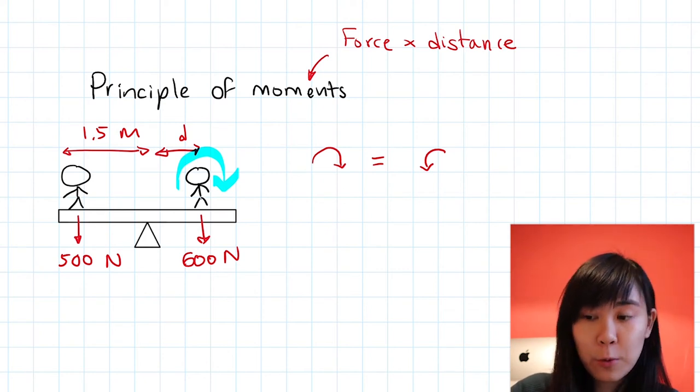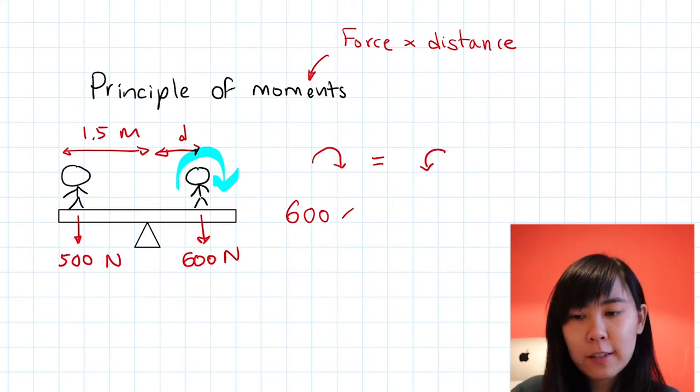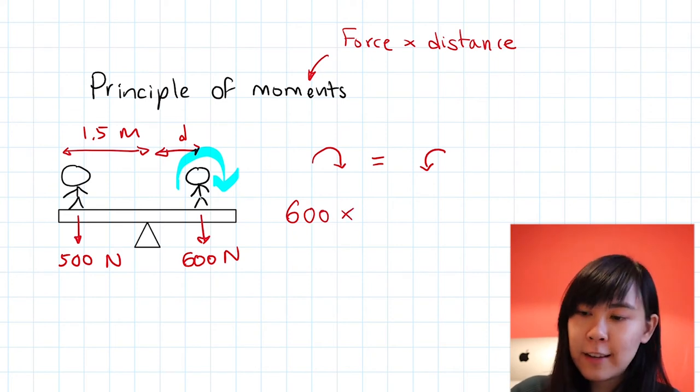And since moment is force times distance, I can take his weight as the force, which is 600, times by the distance from the pivot. In this case, it is d. That is our unknown.